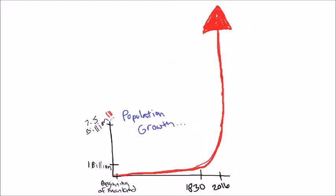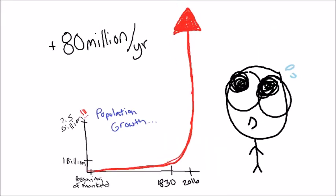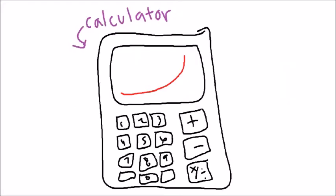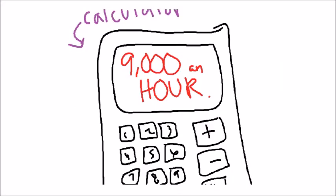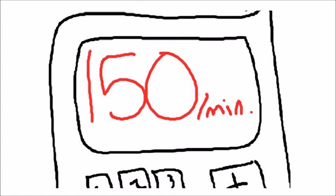Our population continues to grow at an exponential rate of about 80 million people per year. That's a growth of about 200,000 people per day, 9,000 people per hour, or 150 people per minute.